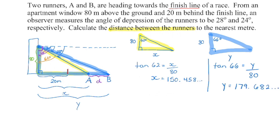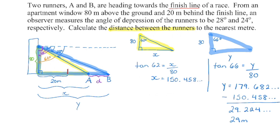We're not done yet. The question asks for the distance between runners. If we know the distance from here to here, and we know the distance from here to here, by subtracting those two I can get the distance between the runners. So I take 179.68 and subtract 150.458, which gives 29.224. This rounds to the nearest meter, so they are 29 meters apart.